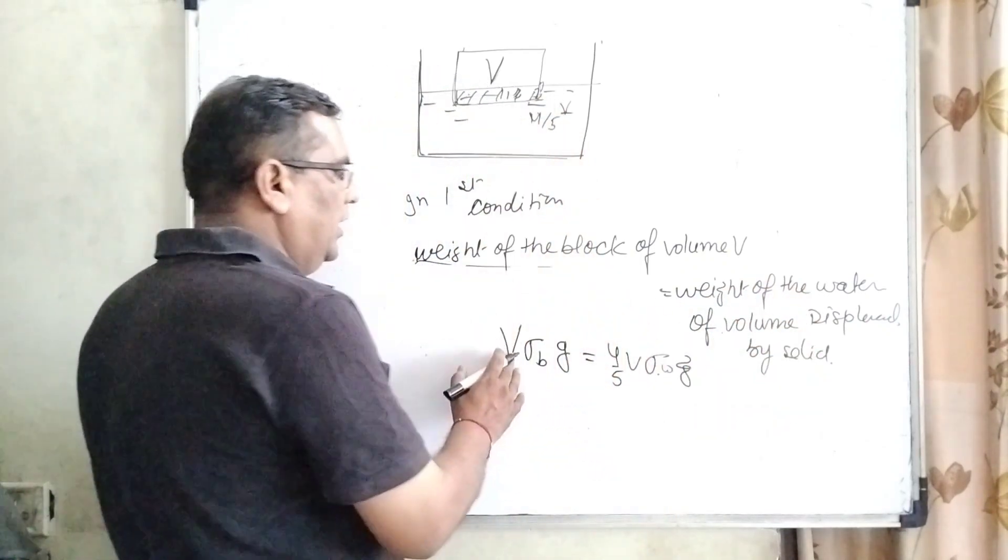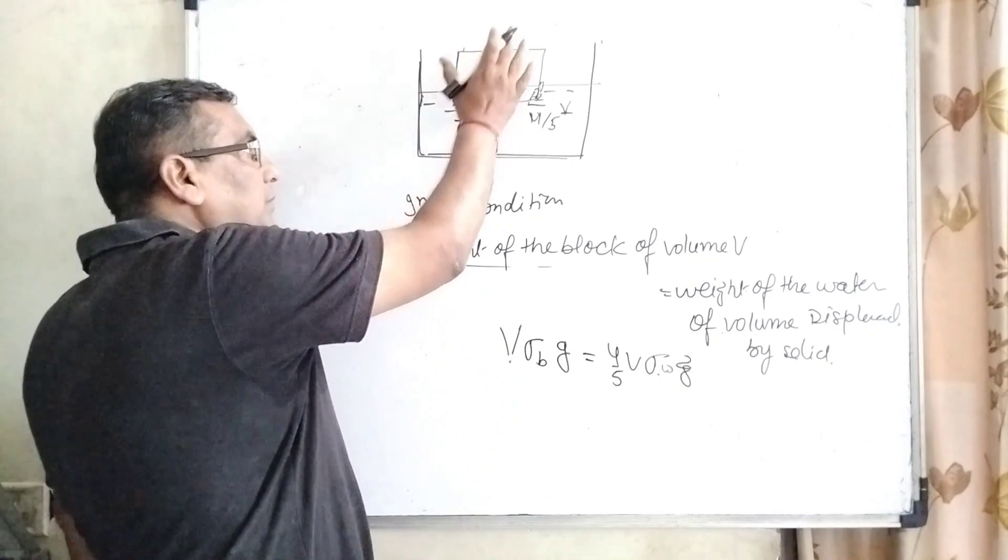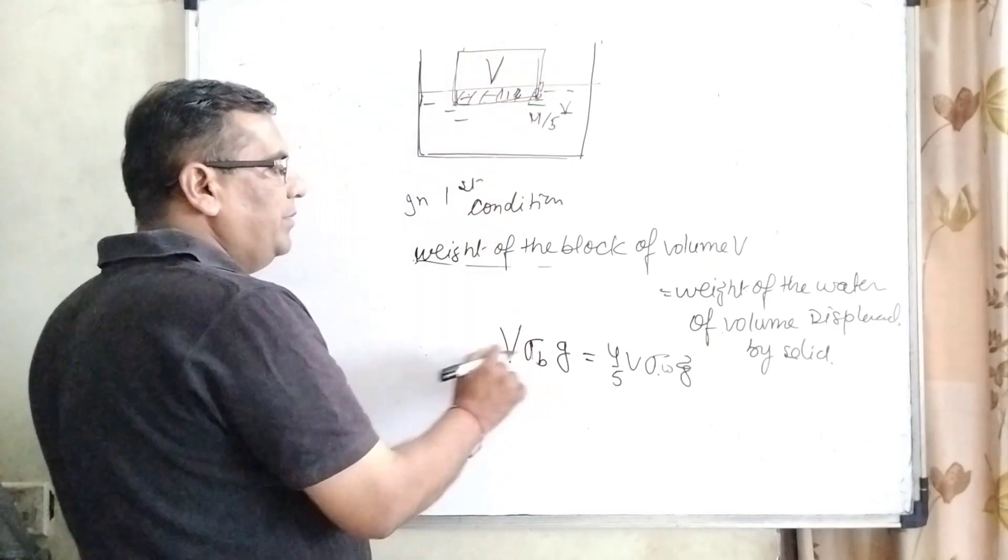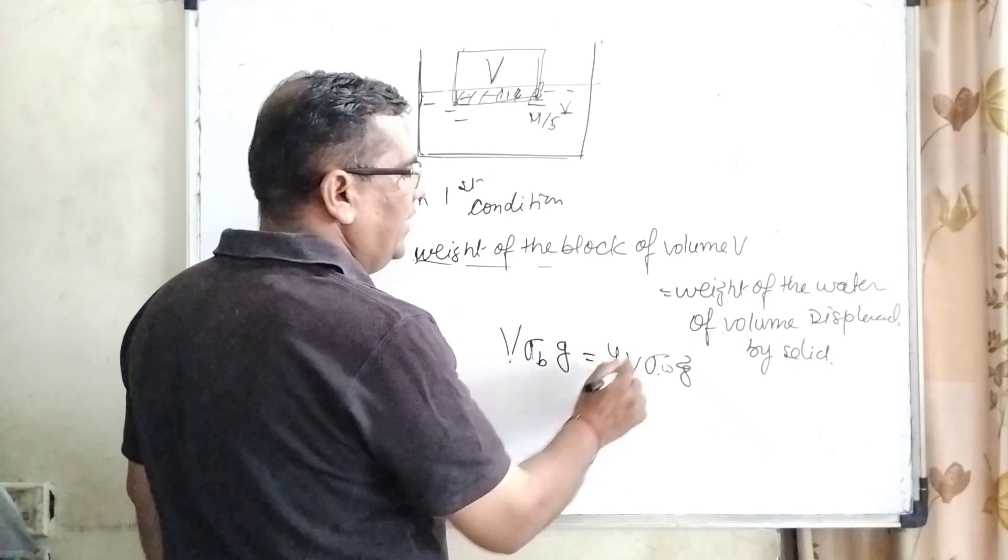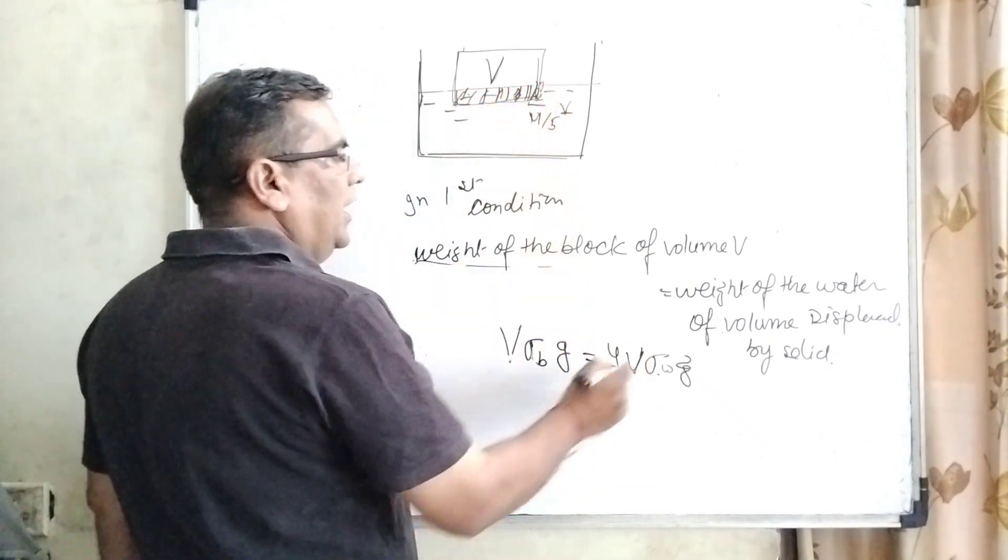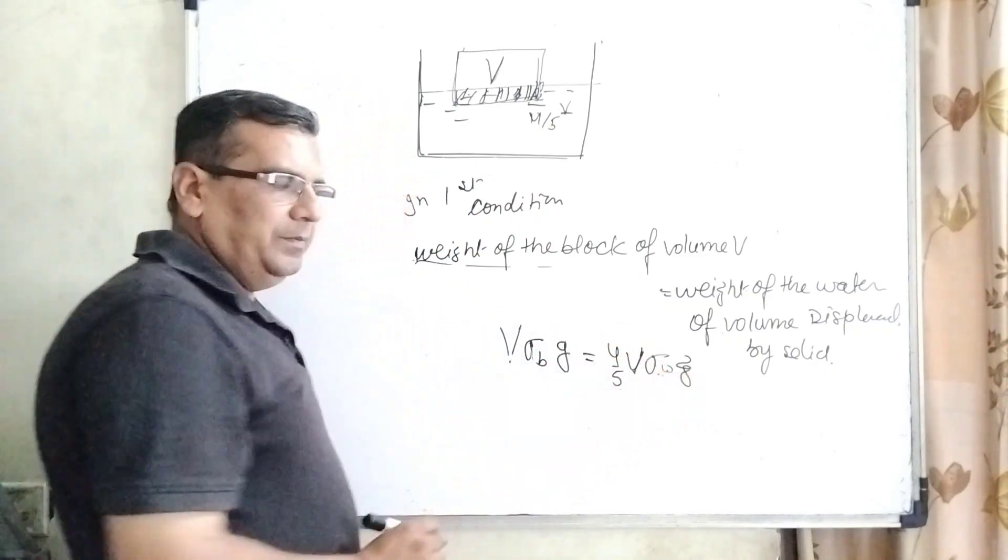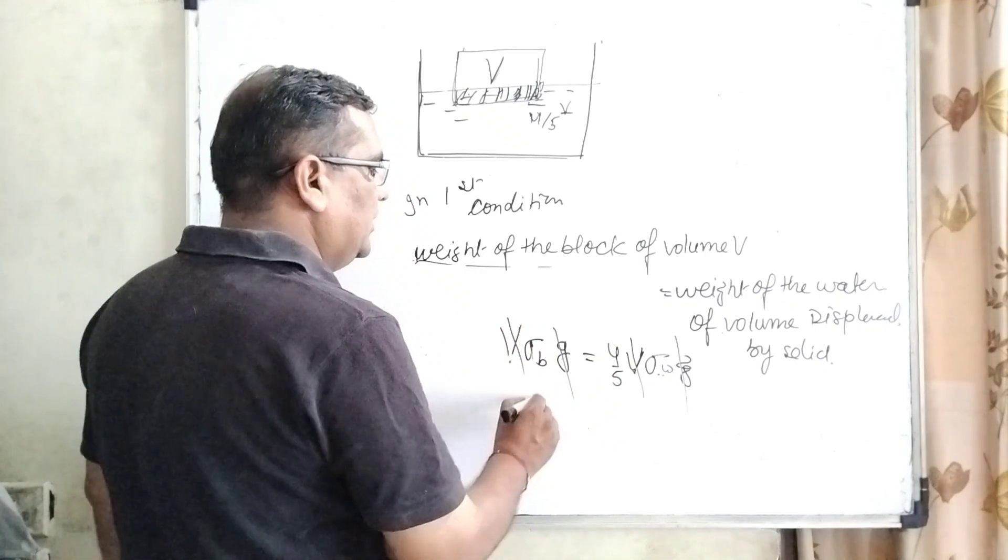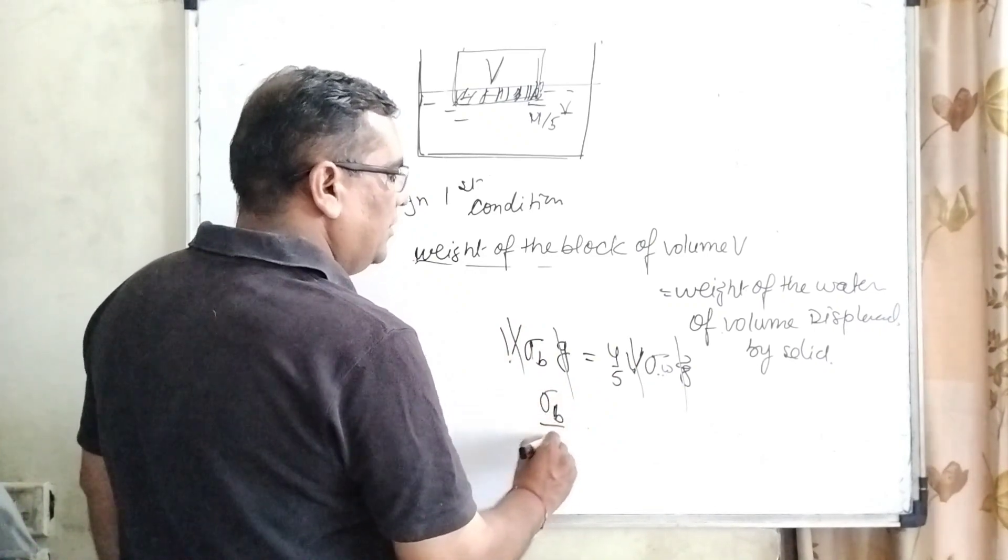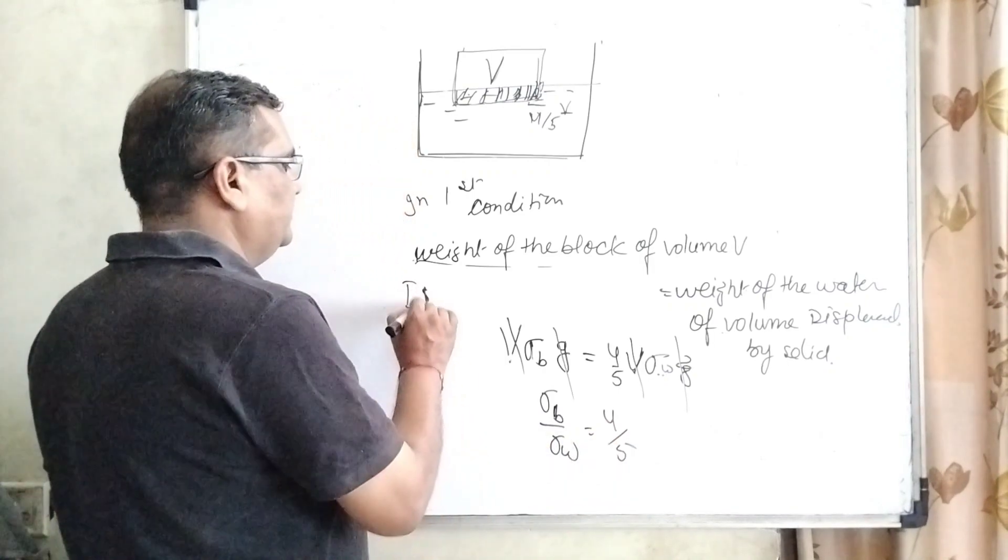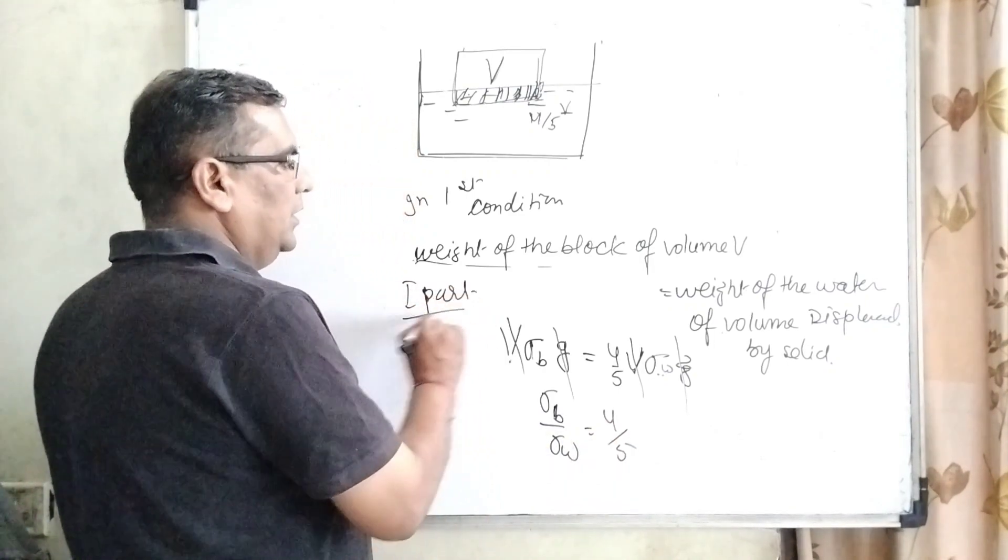So therefore weight of the block of volume V is equal to weight of the water of volume displaced by this solid. So here volume of this total block and density sigma B times G equal to 4 by 5 V, because this portion is immersed, and density of water into G. So here G cancel V, V cancel, then sigma B upon sigma W equal to 4 by 5. This is first part.